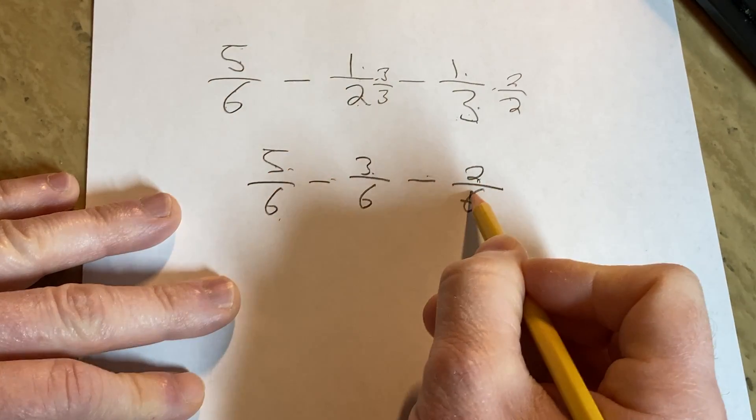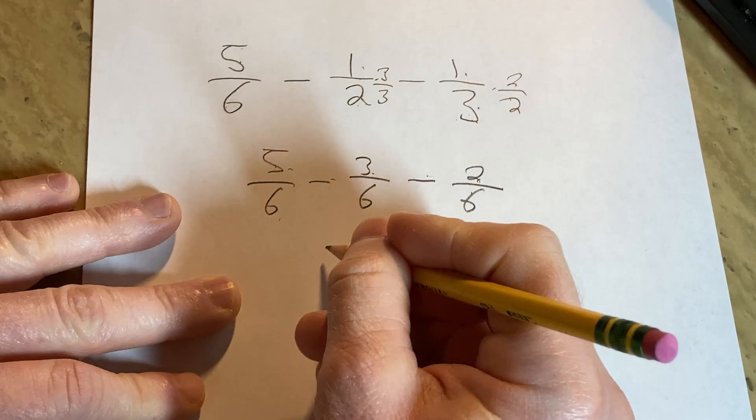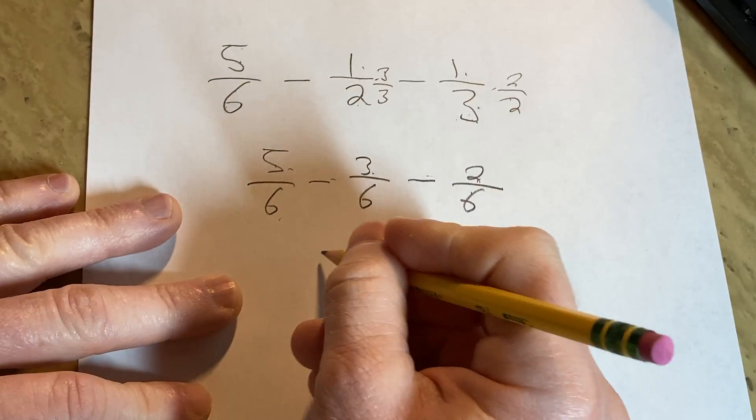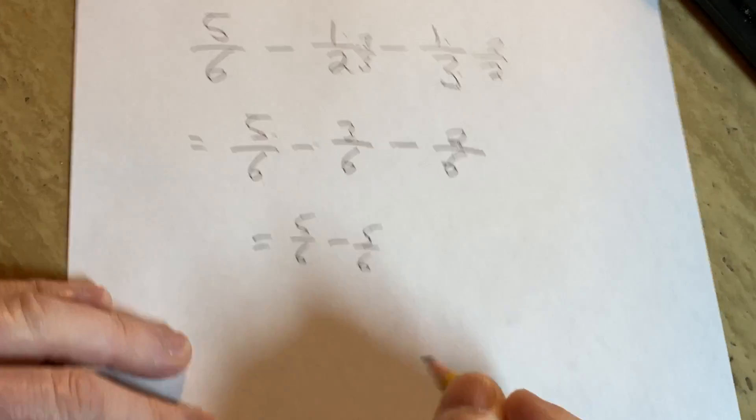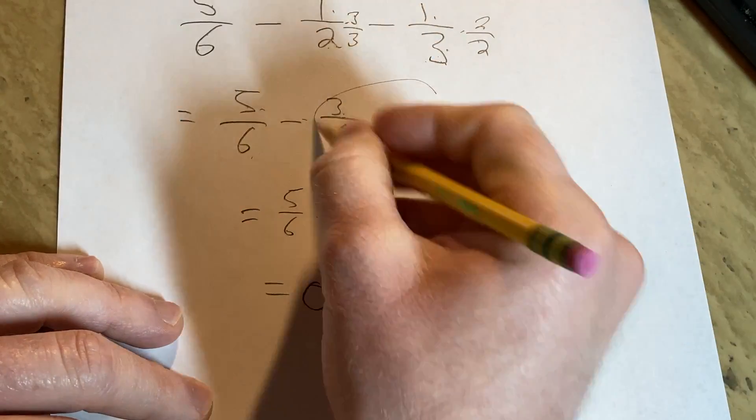Oh, look at that. It's going to be 5 minus 5, right? So it's going to be 0, right? Because this is going to be 5 over 6 minus 5 over 6. Let's put equal signs here if you want. So this is just 0, right? Because this is minus 5 over 6.